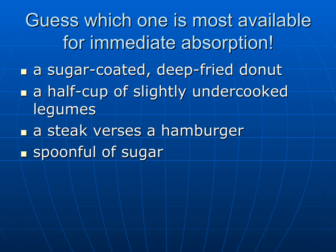Why not the sugar-coated donut? Because it's deep-fried, it also has fat, which slows the bioavailability of the nutrients. The undercooked legumes have lots of fiber, as well as potential phytic acid and oxalates binding the nutrients. Between a steak and a hamburger, the hamburger would be the most bioavailable — because the hamburger has more surface area and more ability for enzymes to work on it, making the nutrients more bioaccessible and bioavailable.